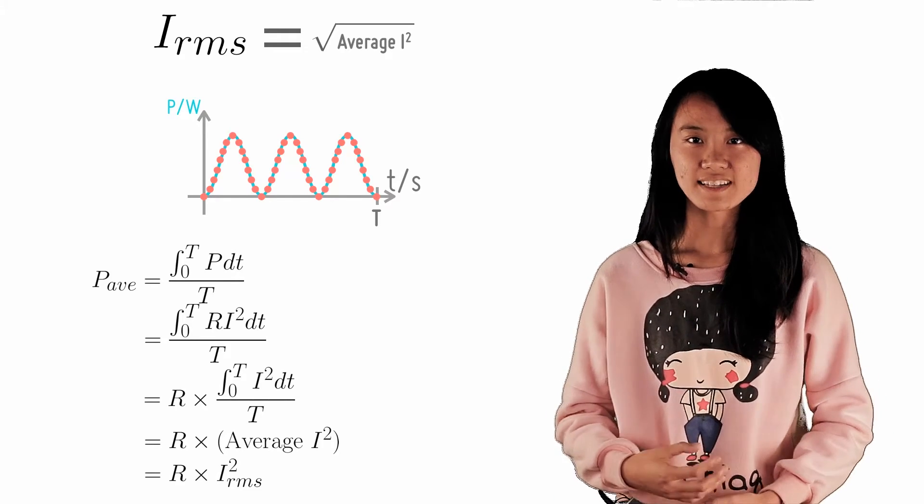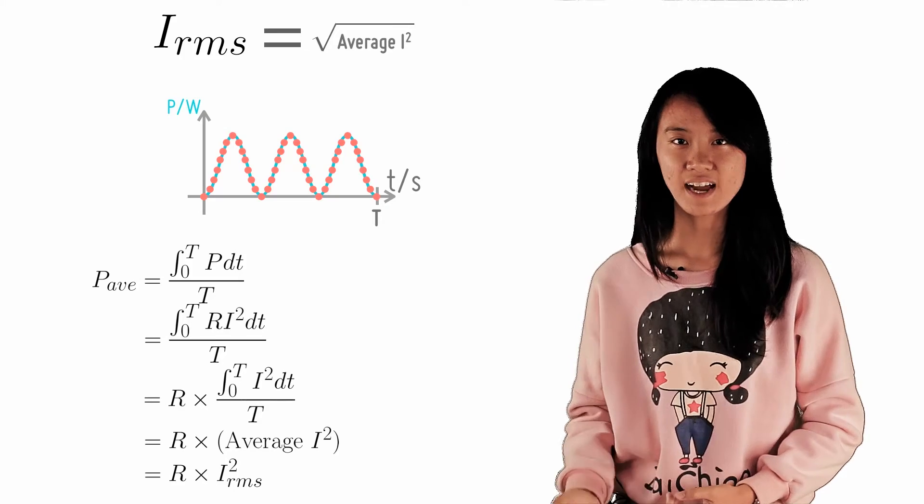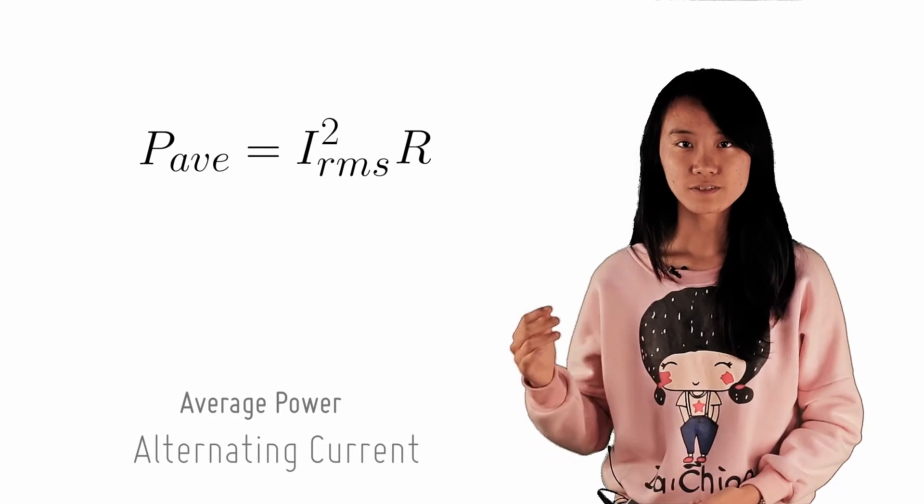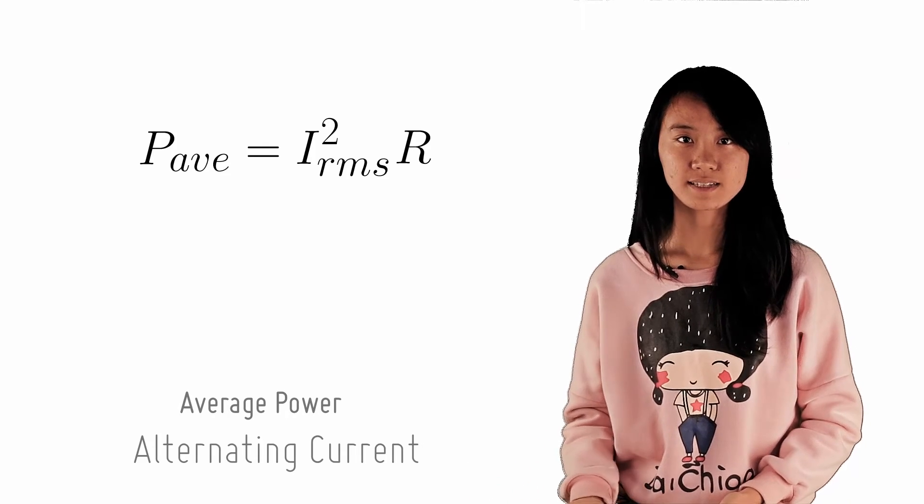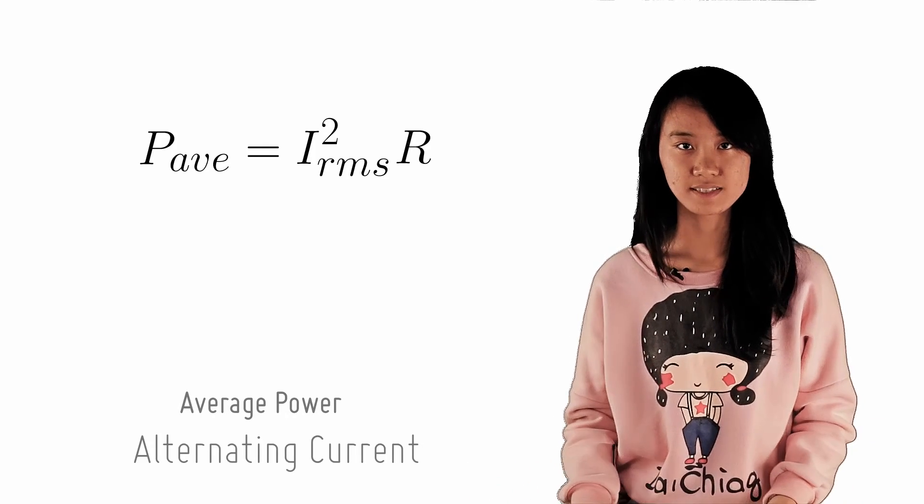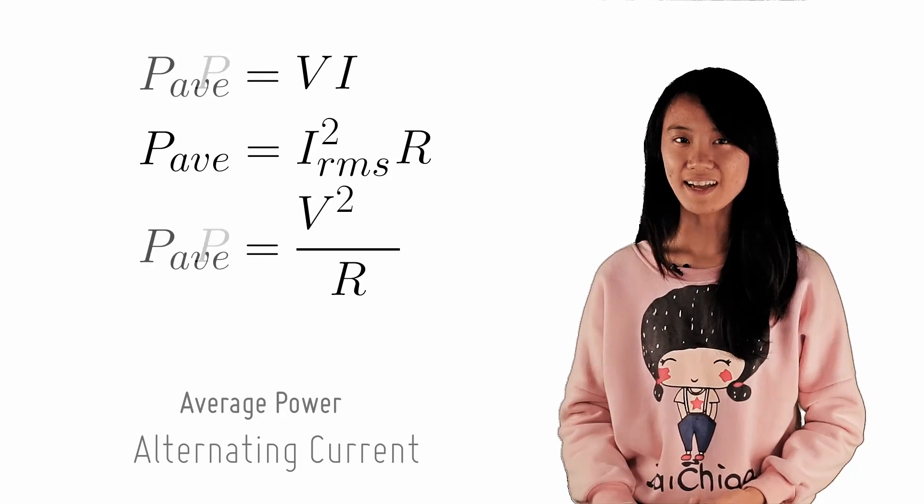So, we have found that the average power can be calculated by P equals I squared R, where I is the RMS current. What about the two other formulas for power in a DC circuit? Well, similarly, we can take RMS voltage and currents, and the formulas will still work. Can you see why?